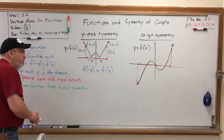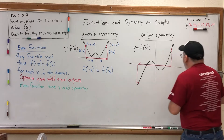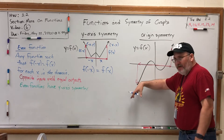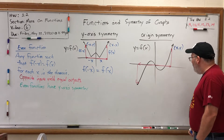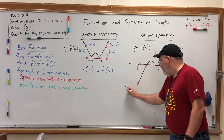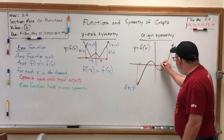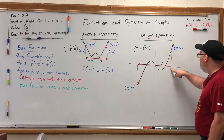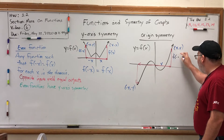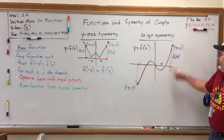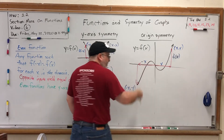What about origin symmetry? Remember what makes a graph have origin symmetry: if every point on the right has a rotational image on the left when rotated 180 degrees. So if we call a point x comma y and rotate it 180 degrees, that point becomes negative x comma negative y. In terms of functions and outputs, we can label the horizontal distance x and the vertical distance y. We get the output by plugging in x, so the vertical distance is f of x.